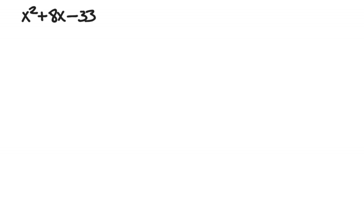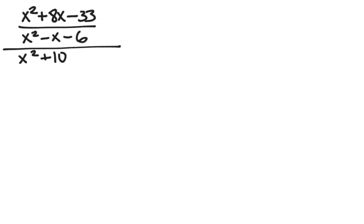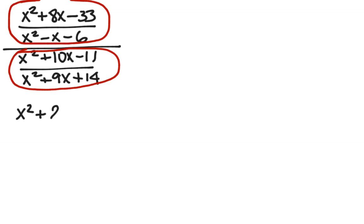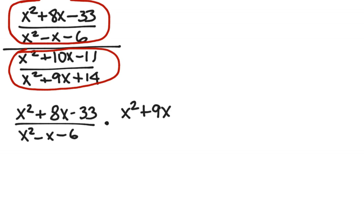Now, when we get to a complex fraction, we have fractions within a fraction. For example, I have x squared plus 8x minus 33 divided by x squared minus x minus 6, over x squared plus 10x minus 11 divided by x squared plus 9x plus 14. It helps to think of this really as one big division problem. We have a fraction in the numerator and a fraction in the denominator, which I have circled. If we think of this as a division problem, that means we can rewrite this as multiplication: x squared plus 8x minus 33 divided by x squared minus x minus 6, then change division to multiplication and write the reciprocal of the second fraction — x squared plus 9x plus 14 divided by x squared plus 10x minus 11.